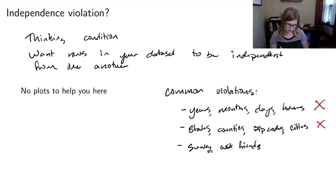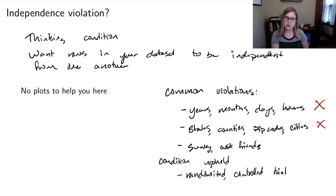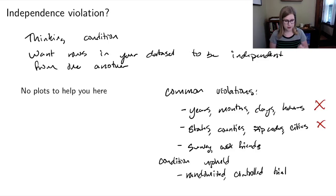The gold standard for upholding the independence condition is a randomized controlled trial, where researchers ensure all subjects — the rows in the data — are independent from one another. Since we can't use plots to check independence, we move on to the normality condition.